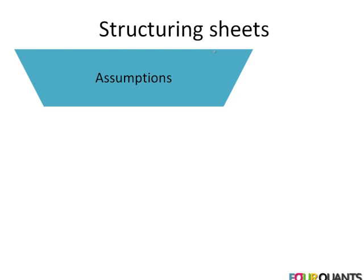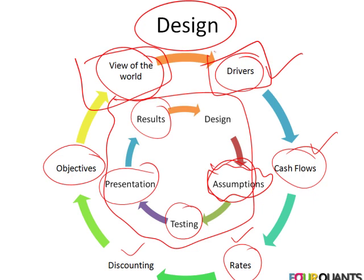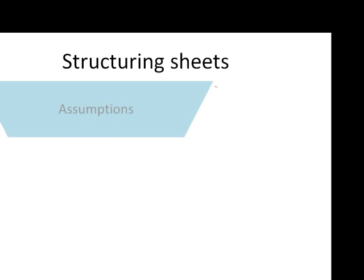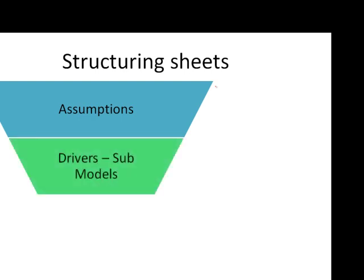When we talk about structuring Excel spreadsheets, we start off with assumptions — and assumptions are directly linked to our view of the world and our drivers. The first step in structuring our sheets is to figure out what are the primary assumptions we need to work with, how would they change, and how would their sensitivity be tracked. Once we identify the assumptions, we go out and identify the drivers or sub-models. Whether we build the retail space model, the power plant model, or the CCS model, in all of these models there are smaller sub-models that feed into the primary results.